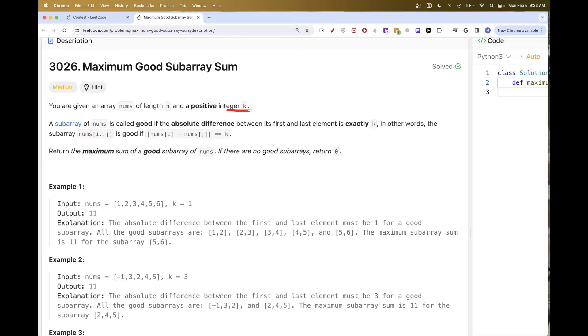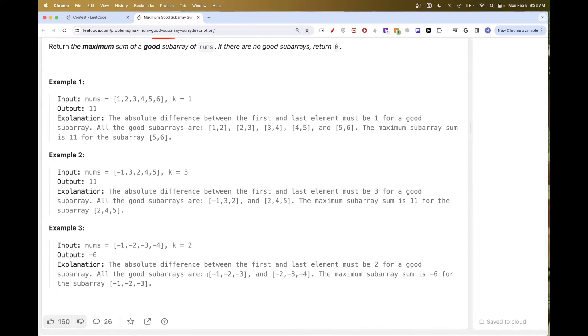And we have this concept of a good subarray, where a subarray is good if the absolute difference between its first and last element is exactly equal to k. So let's say we have a subarray from position i to j. Then if the absolute difference between the first value and the last value is equal to k, then this subarray is good. And the goal of this problem is to return the maximum sum of a good subarray from all the good subarrays. And if we can't find any, we can just return 0.